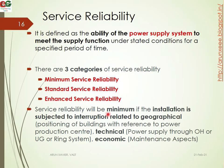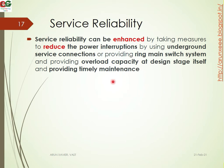Reliability will be minimum if the installation is subject to interruptions related to geographical conditions. Enhanced service reliability can be achieved by taking measures to reduce power interruptions — such as providing underground systems, ring main switching, and providing overall capacity at the design stage itself, as well as providing timely maintenance.